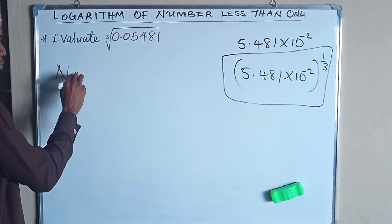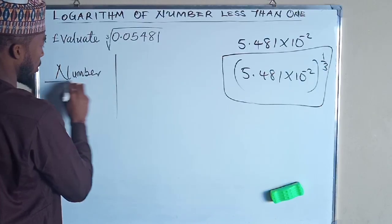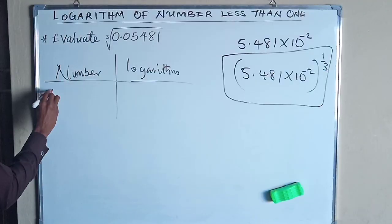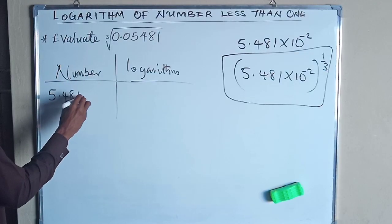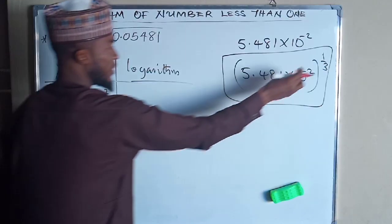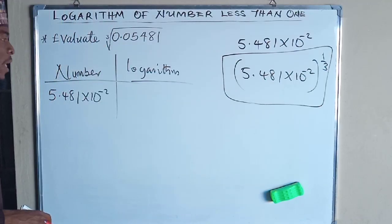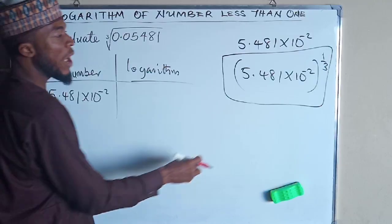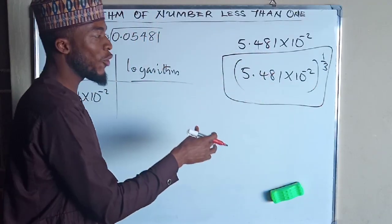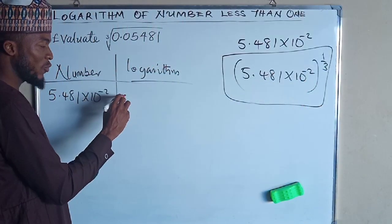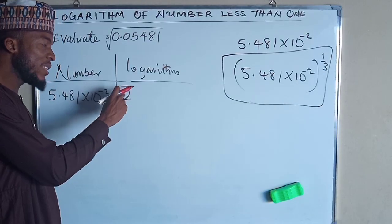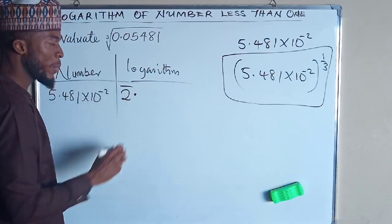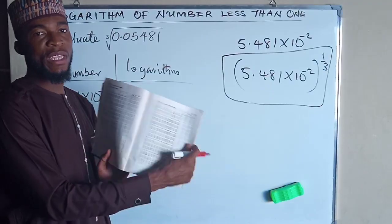So this is how we do it — Number, then Logarithm. The number is 5.481 times 10 raised to the power of negative 2. Logarithm comprises of two things: the characteristic and the mantissa. The characteristic is the power of 10 when the number is transformed into standard form, and the power of 10 is negative 2. But we are not going to write it as negative 2 but bar 2, because it is only this index that is negative — the numbers themselves are not negative. Only the index is negative. Then point, then you bring your mantissa.